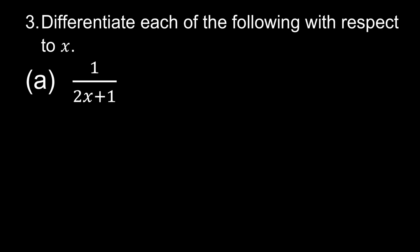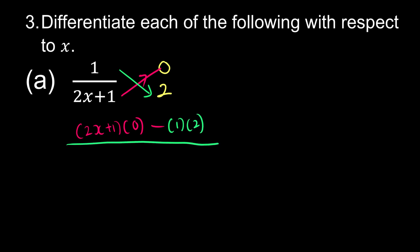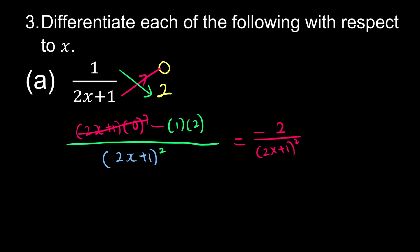Question 3: We're going to use the quotient rule. The derivative of 1 is 0, and the derivative of 2x plus 1 is 2. Bottom times derivative of top minus top times derivative of bottom: (2x plus 1)(0) minus (1)(2), all over (2x plus 1) squared. This simplifies to negative 2 over (2x plus 1) squared.